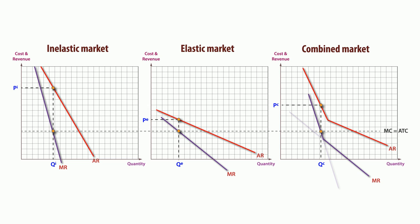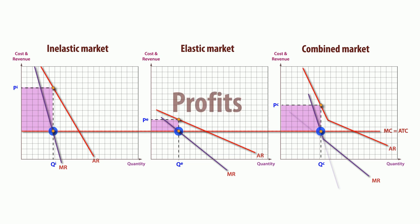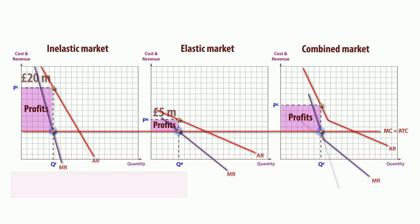Profits from separation can also be compared with those from combining the sub-markets. If we assume marginal cost is constant across all sub-markets, whether or not the market is divided, it will equal average total cost. Profits will be maximized at the price and output where marginal cost is identical to marginal revenue. In this case, profits from separating the market, at £25 million, are greater than from combining the market, at £22 million.